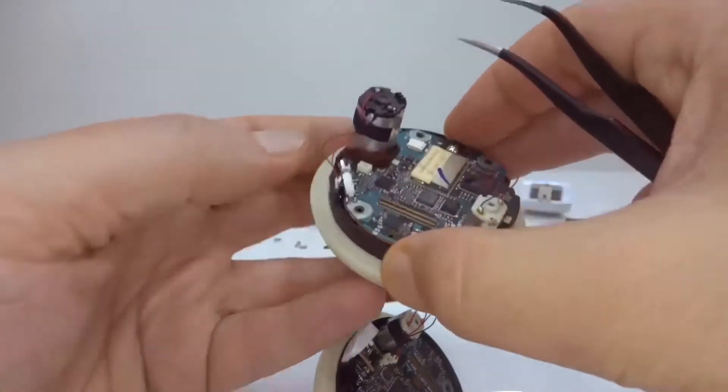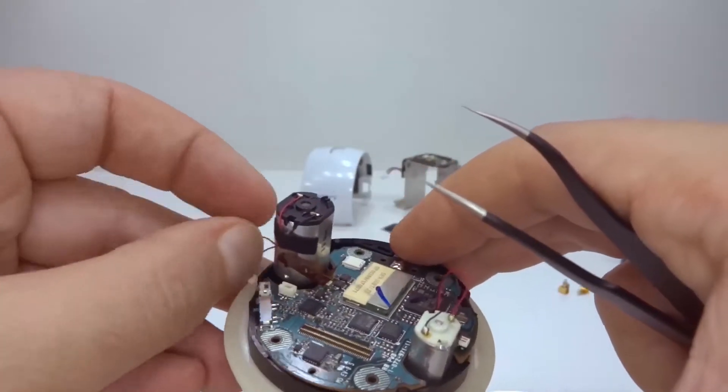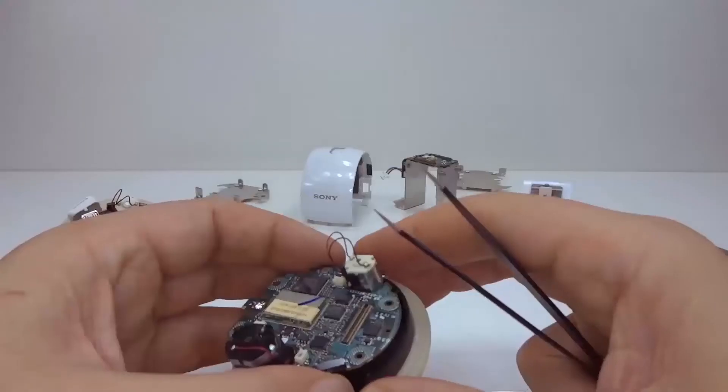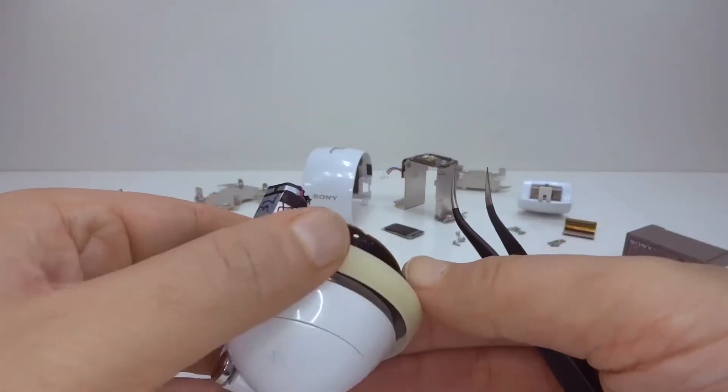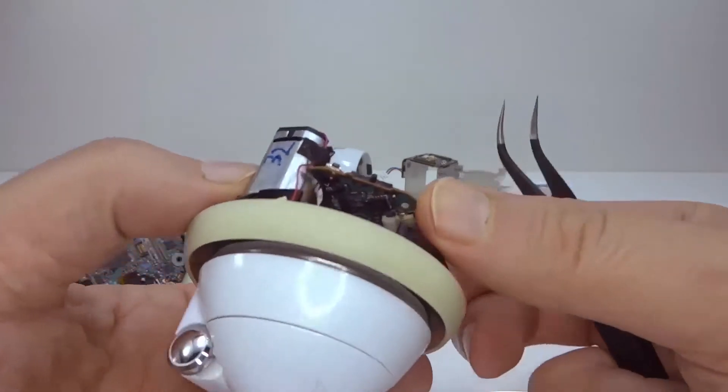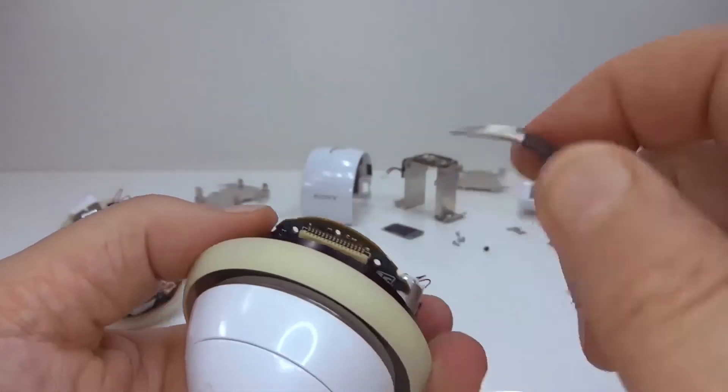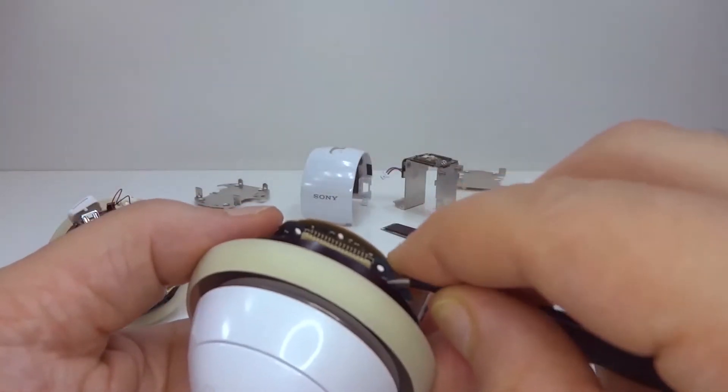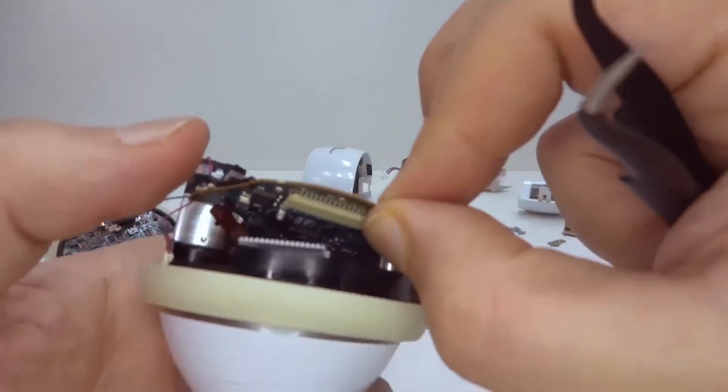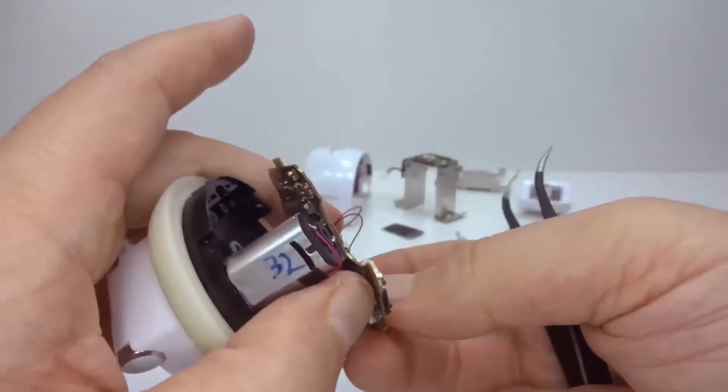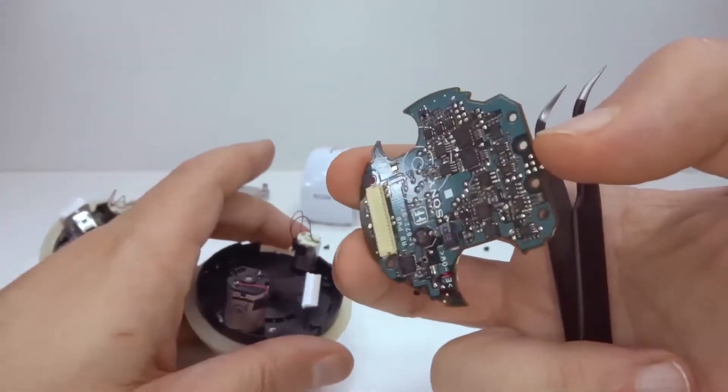Yep, there it goes. That ribbon cable there also needs to get out of the way. Alright, so I passed both of those but we've got a connector under there. Should be able to see that. Yep. One. Two. Not bad. And we have the board out.